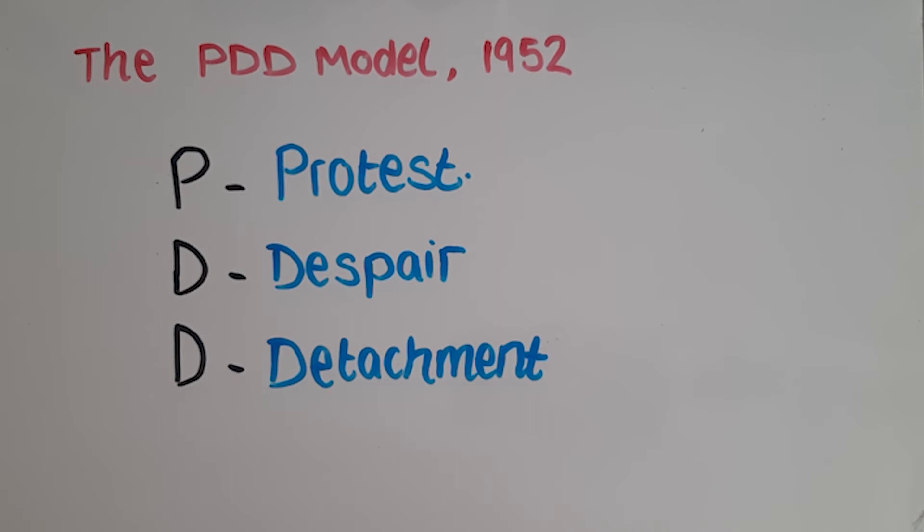These findings contradicted the dominant theory of attachment at the time by Donald and Miller. They took a behaviourist approach rather than Bowlby who took an evolutionary approach. Donald and Miller seemed to underestimate the child's bond with their mother. The behavioural theory of attachment stated that the child became attached to their mother because she is the one who feeds the infant.